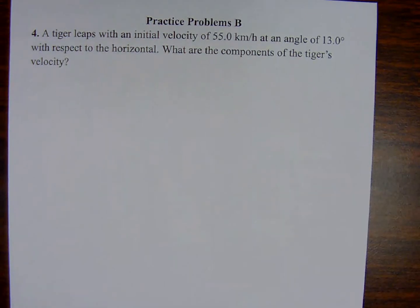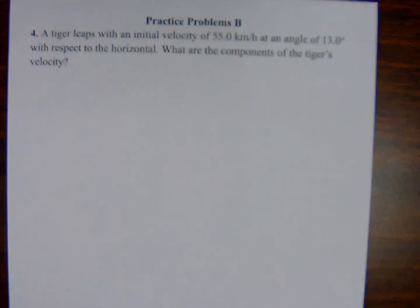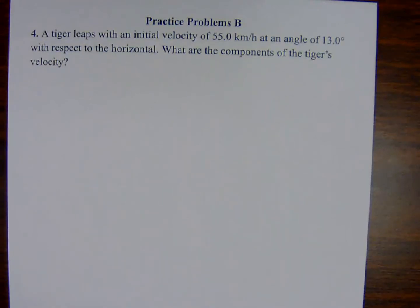Practice problem number four associated with sample problem B. A tiger leaps with an initial velocity of 55.0 kilometers per hour at an angle of 13.0 degrees with respect to the horizontal. What are the components of the tiger's velocity?